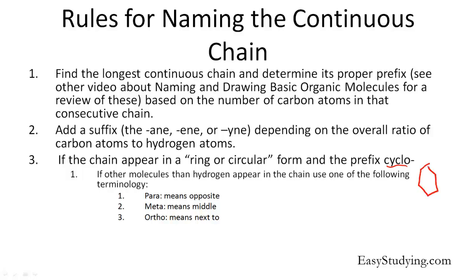Depending on how many corners there are — these corners represent carbons — this cyclo group forms a ring. If other molecules besides hydrogen appear in the chain — as hydrocarbons consist of only carbons and hydrogens — the following terminology is used: para, meaning on opposite ends; meta, meaning in the middle; and ortho, meaning next to. This will make more sense later when I start doing the examples in this video.